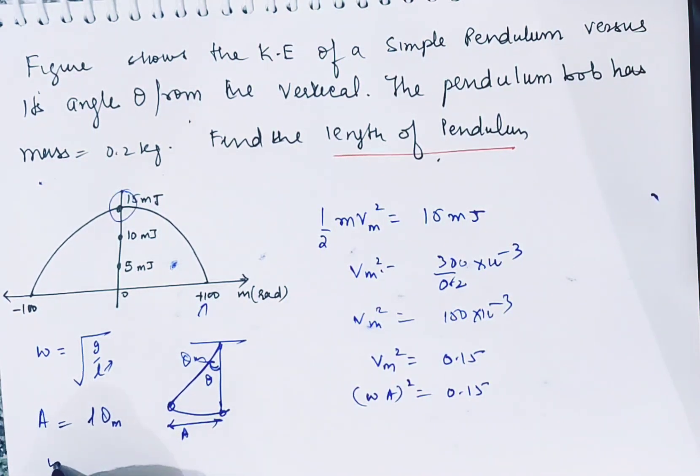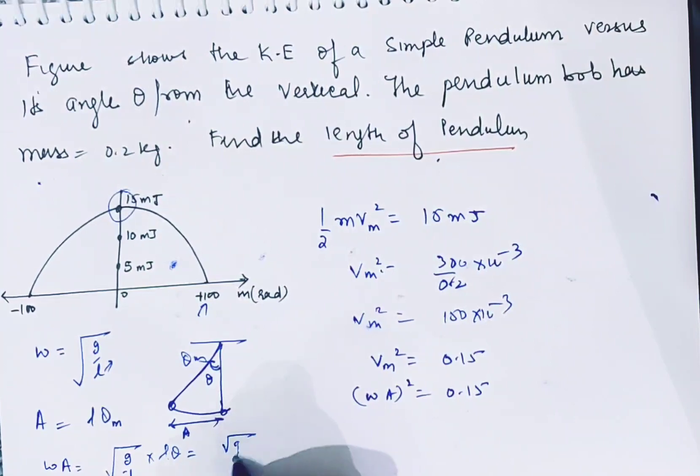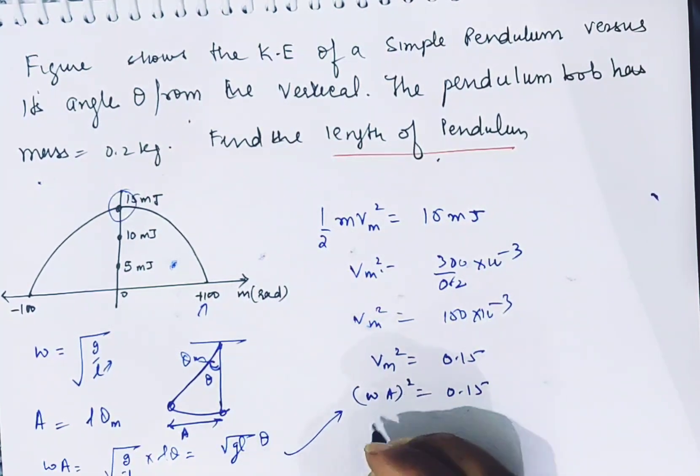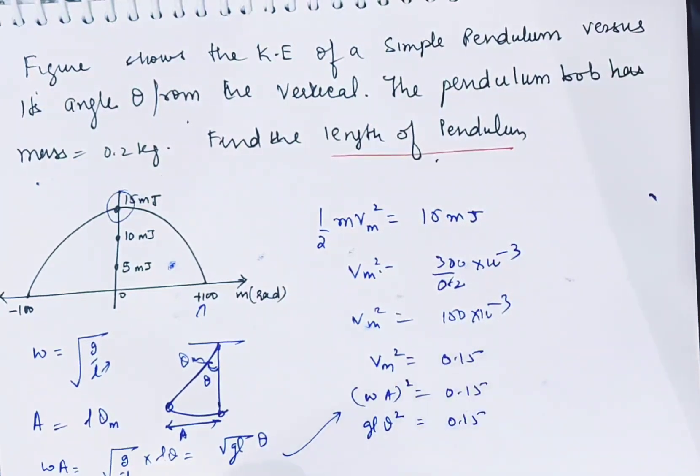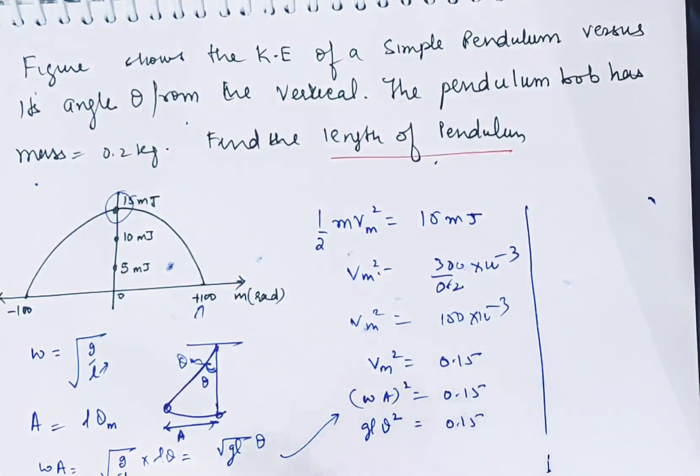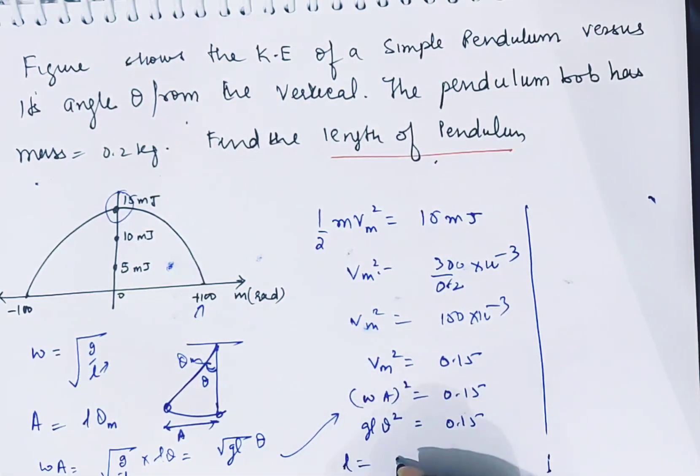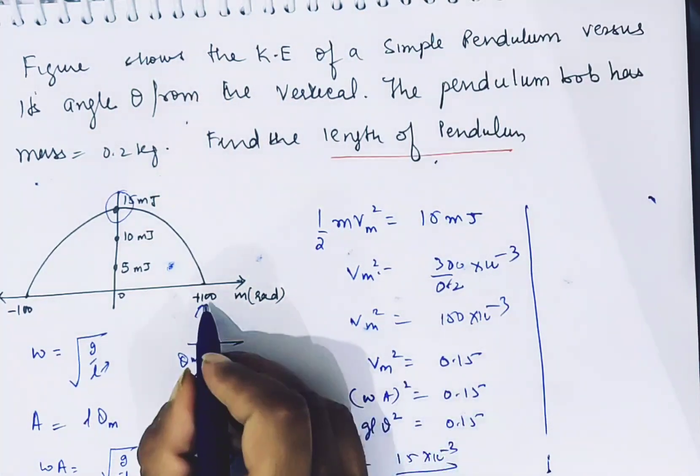This equals 0.15, that means root g l theta squared equals 0.15, so g l theta squared equals 0.15.